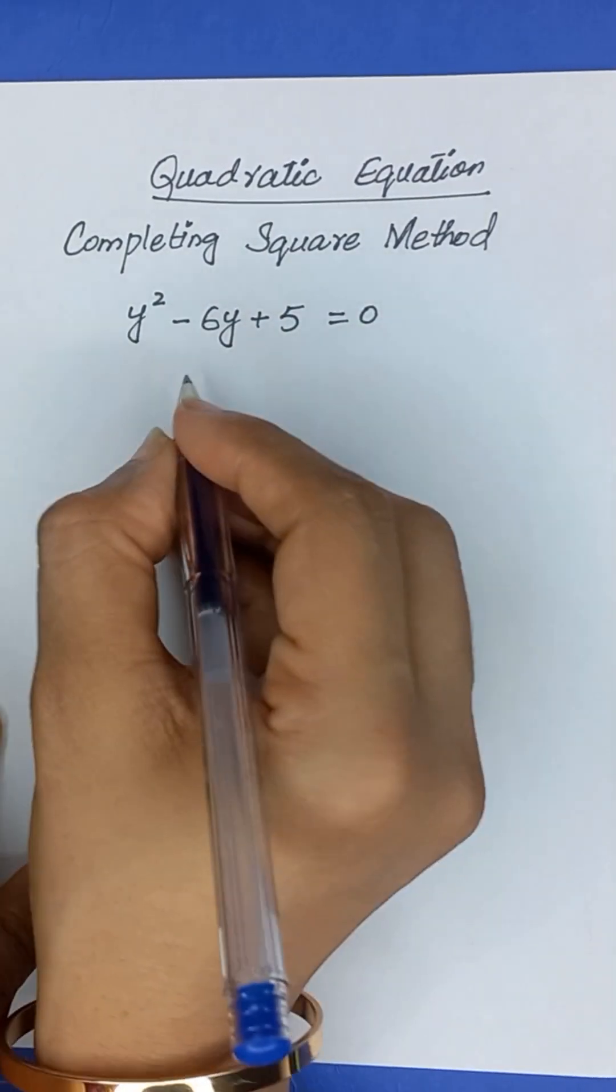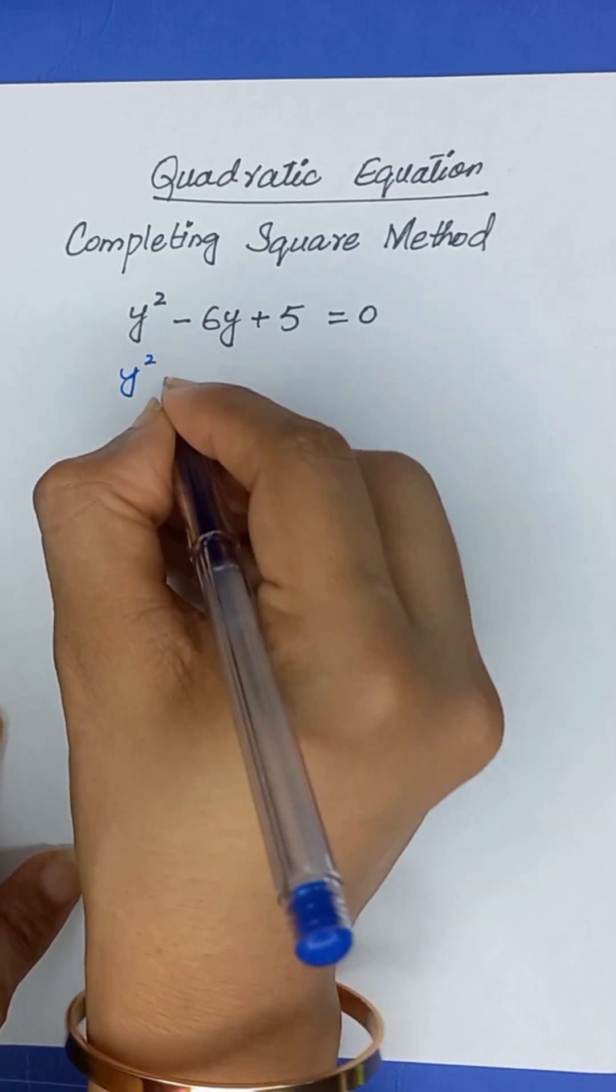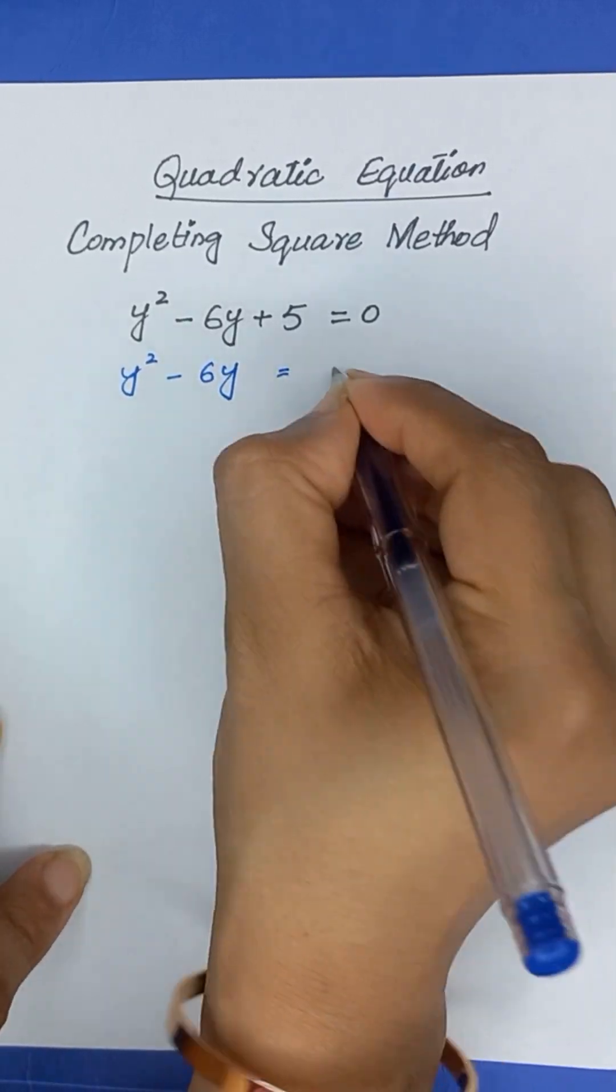First of all, I will take this positive 5 to the right hand side. So, it will become y squared minus 6y is equal to minus 5.